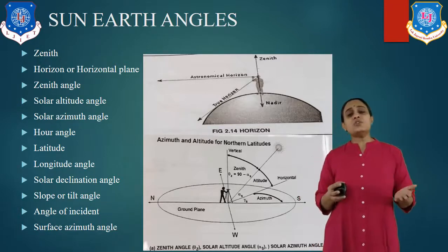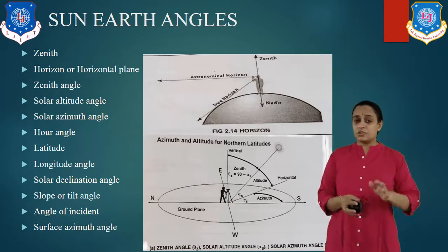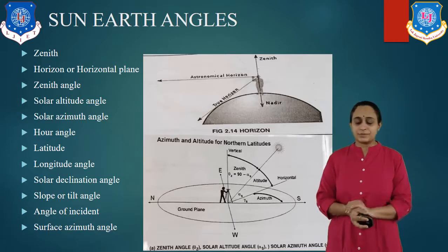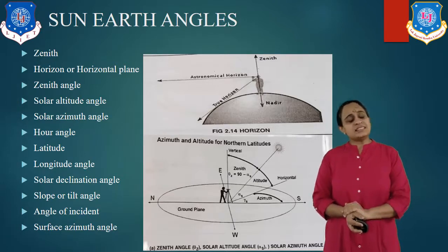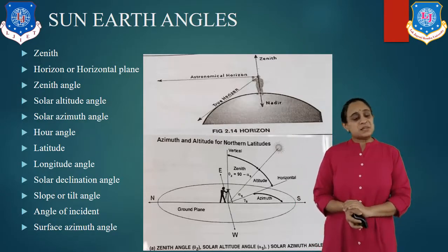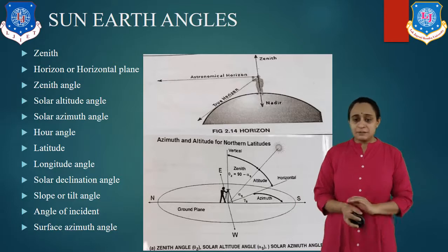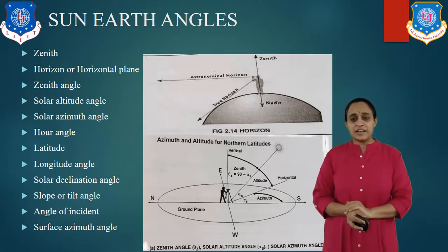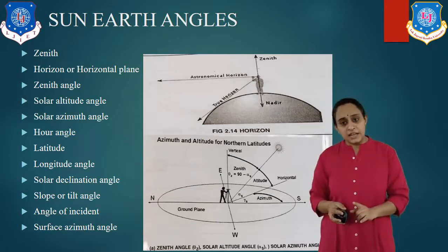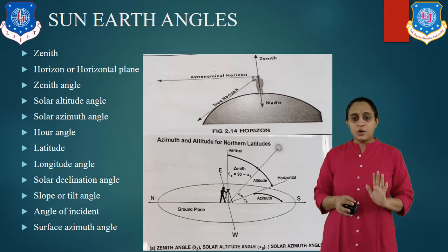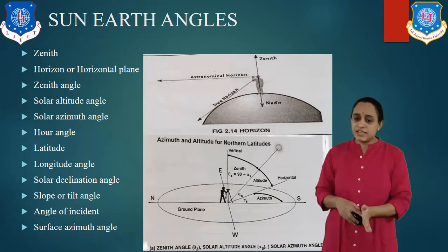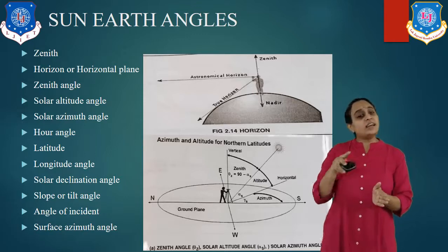Now let us study the zenith angle, represented as theta-z. As you see in our diagram, it is the angle between the sun's rays and the perpendicular line to the horizontal plane of the Earth. The angle between the sun's rays and the horizontal plane at the zenith is known as the zenith angle.